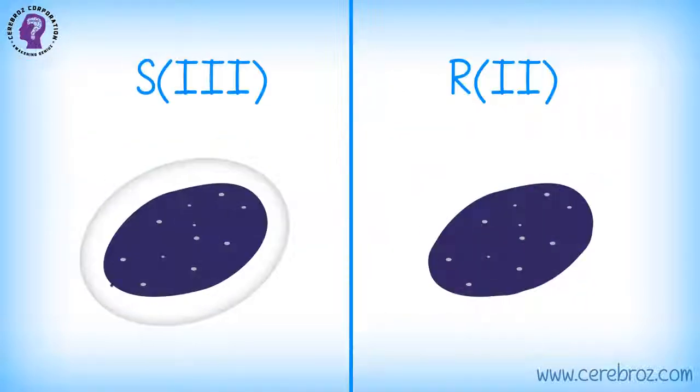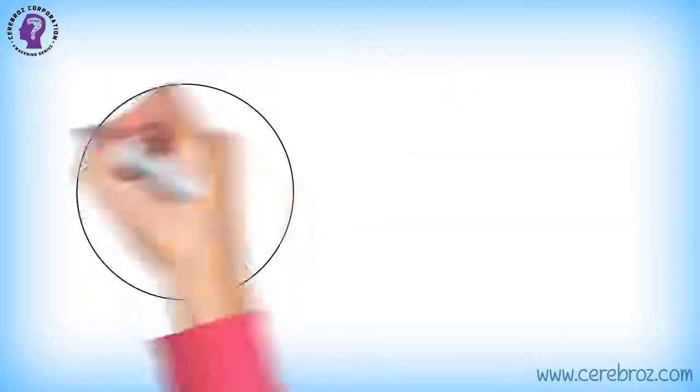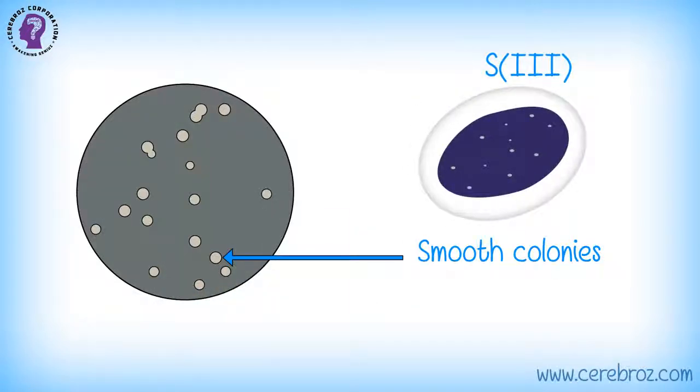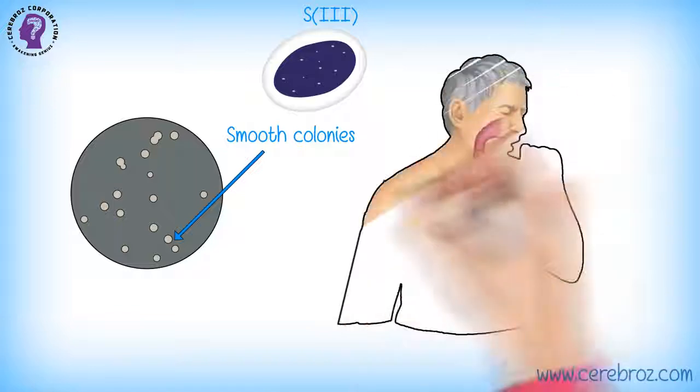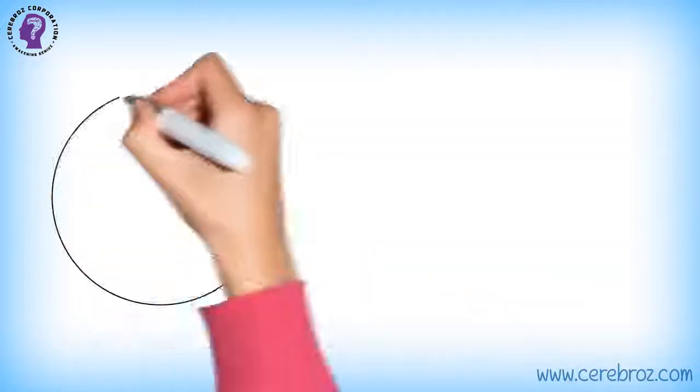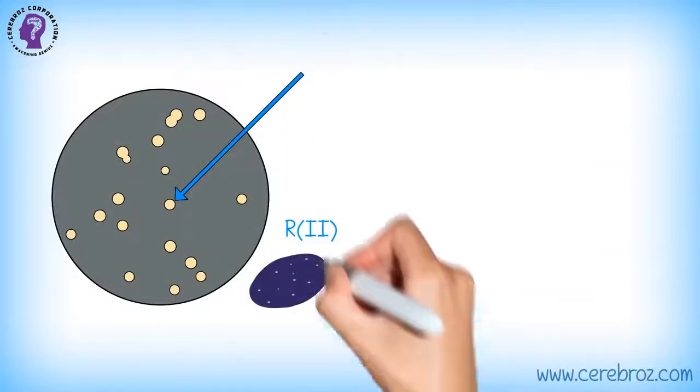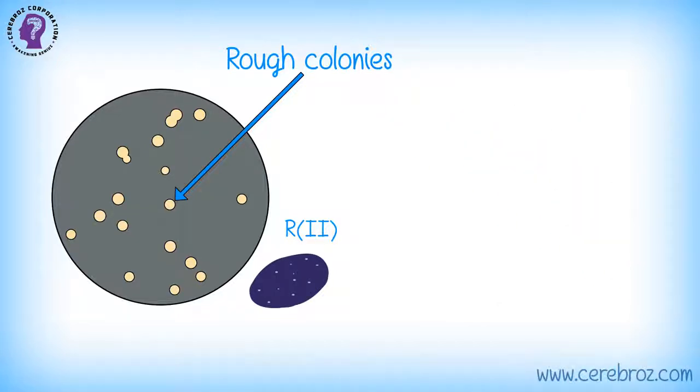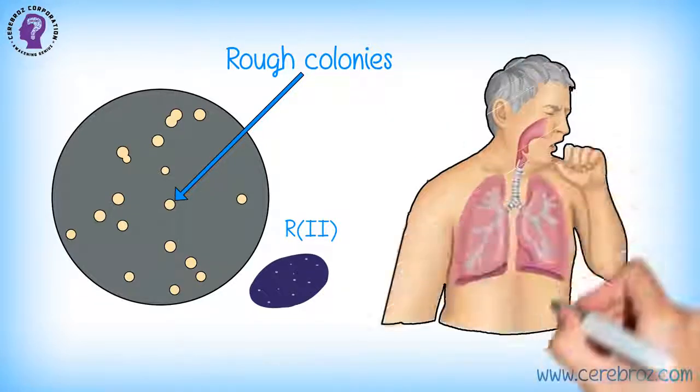Griffith's experiment. Griffith took two strains of pneumococcus bacteria. S3, which has a smooth polysaccharide capsule, giving smooth colonies and is virulent, causing pneumonia. And R2, which has no capsule, giving rough colonies and is avirulent, unable to cause pneumonia.